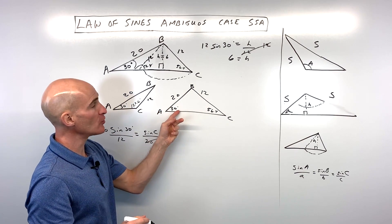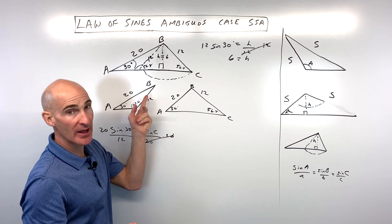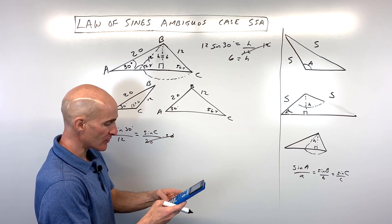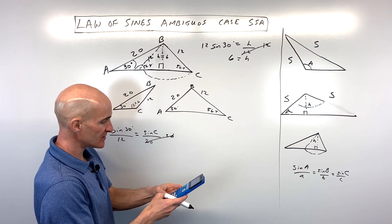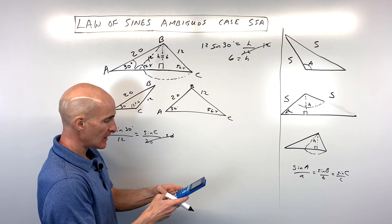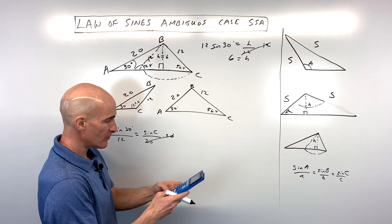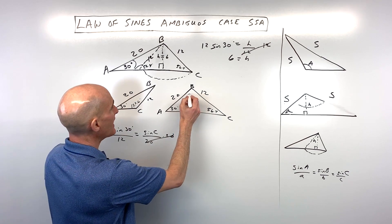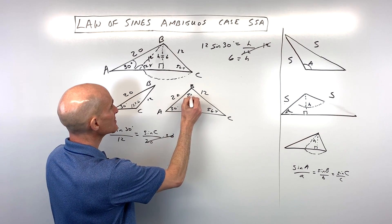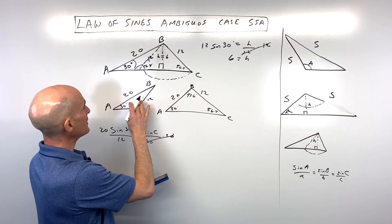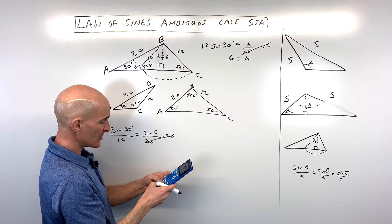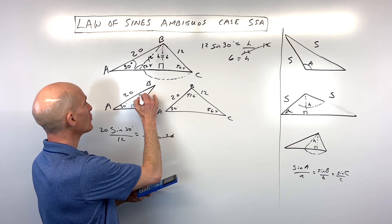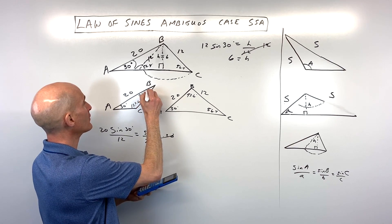Now we have two angles in each triangle, so we can find the third angle by adding and subtracting from 180°. For the first triangle: 30 + 56.4 subtracted from 180 gives angle B = 93.6°. For the second triangle: 30 + 123.6 subtracted from 180 gives angle B = 26.4°.